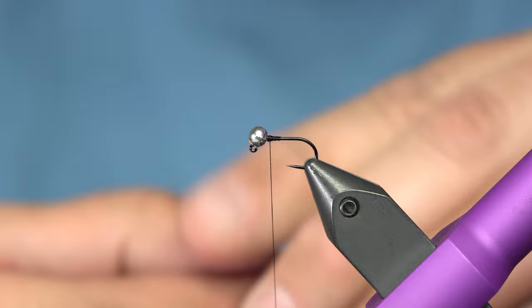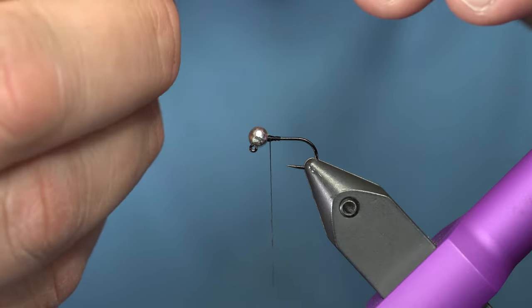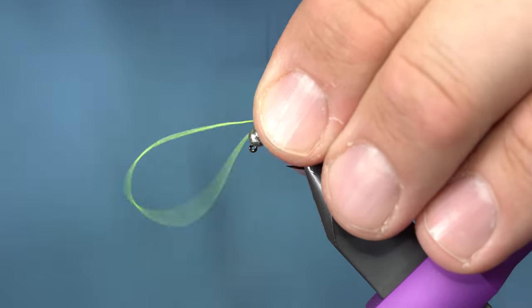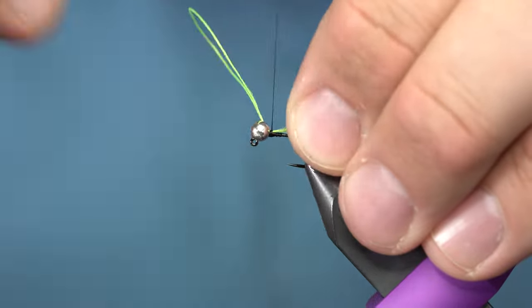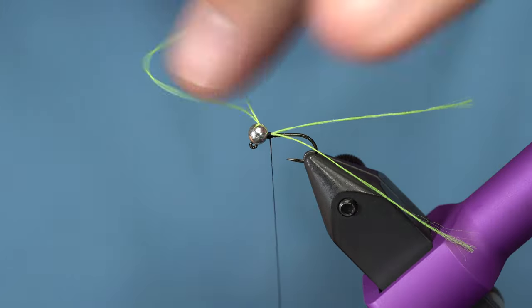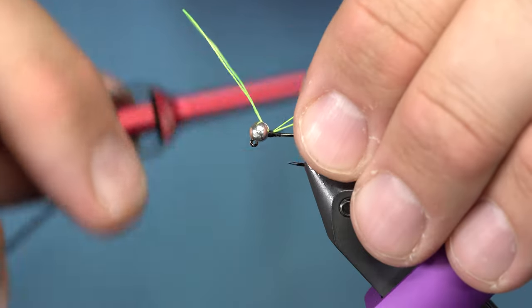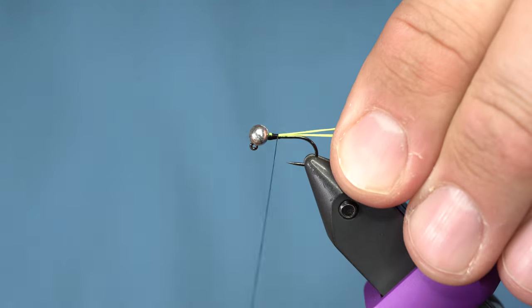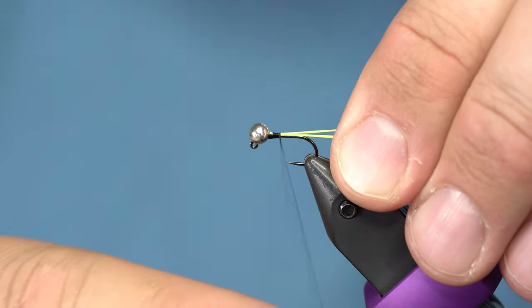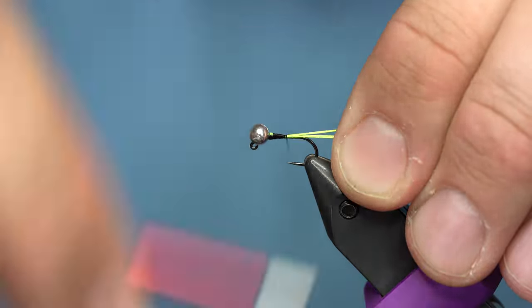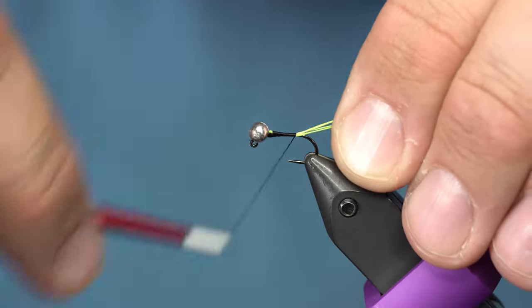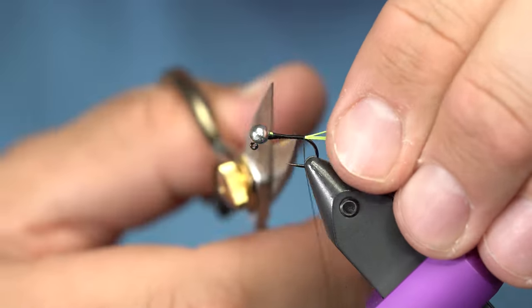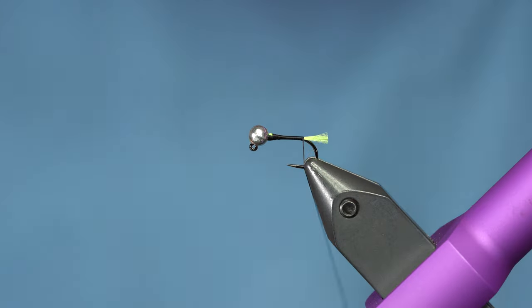Okay, so this fly has a little tag made out of this Glowbrite, and I want the body to be fairly thin and uniform, so I'm just going to tie this in. I've just taken one piece and I've doubled it over like this. Once I have a few wraps, I just pull all those back, flatten my thread out, and then I just wind it back, and it creates a nice little uniform body. We'll take the tag and we'll trim it about like that.